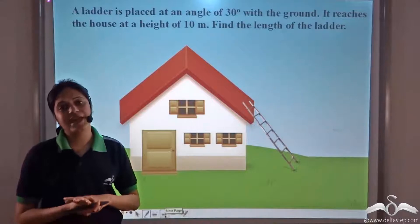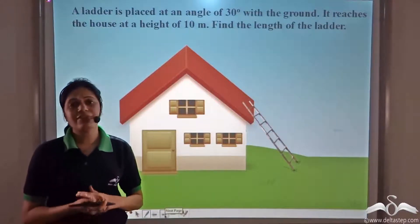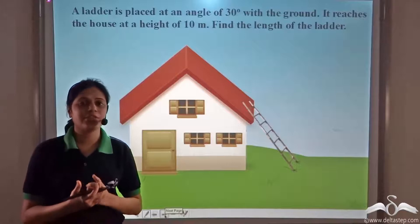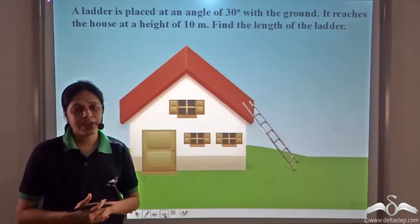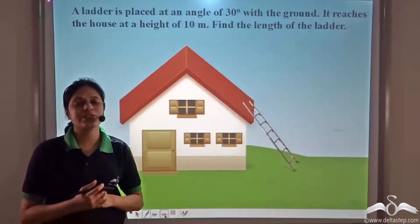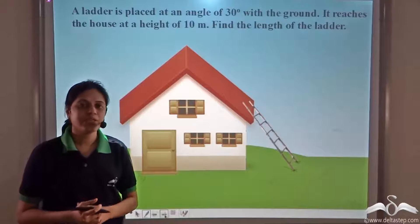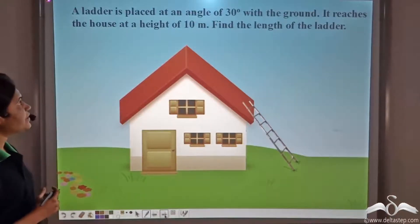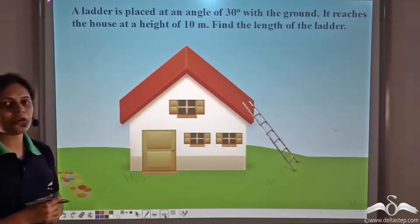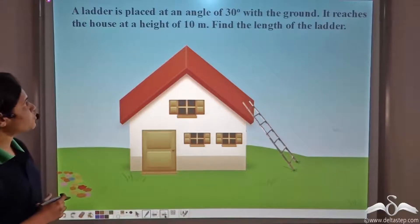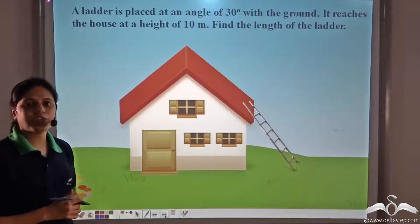You might be wondering why we need to remember these trigonometrical ratios and why we study them for different angles. We are doing this because they are very useful in real life application problems. For example: a ladder is placed at an angle of 30 degree with the ground and reaches a house at a height of 10 meters. Find the length of the ladder.